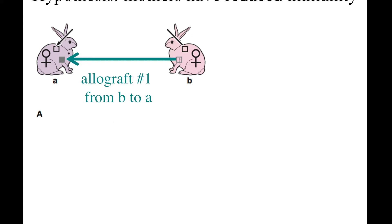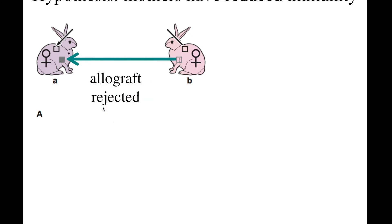Knowing that embryos are not rejected, one of the hypotheses to test was: maybe mothers just have a reduced immunity while they're pregnant, and therefore that's why they don't reject their embryos. Experiments were done with rabbits — they did allografts. Two rabbits, rabbit A and rabbit B: transfer a small spot of skin from B to A, and it's rejected.